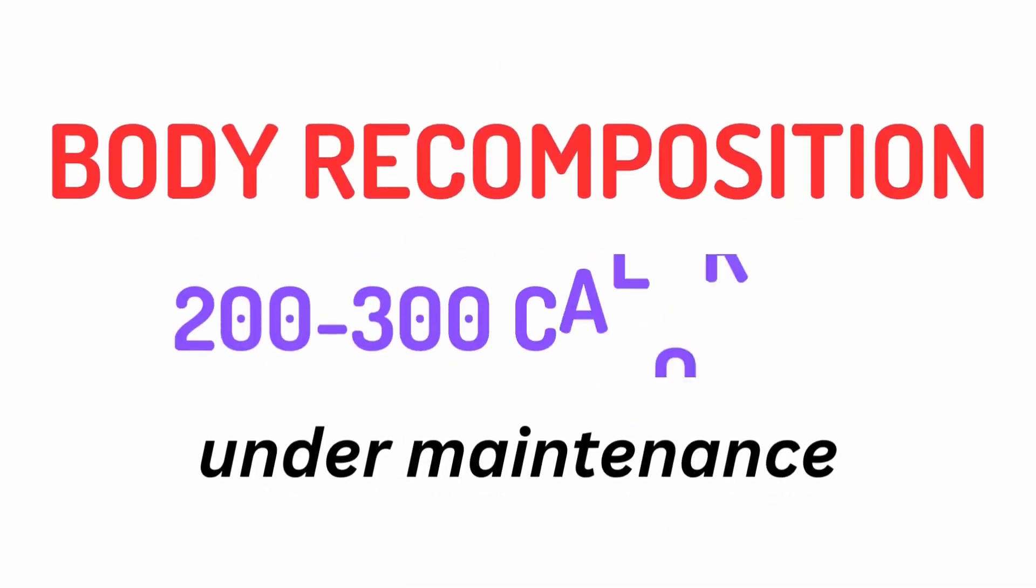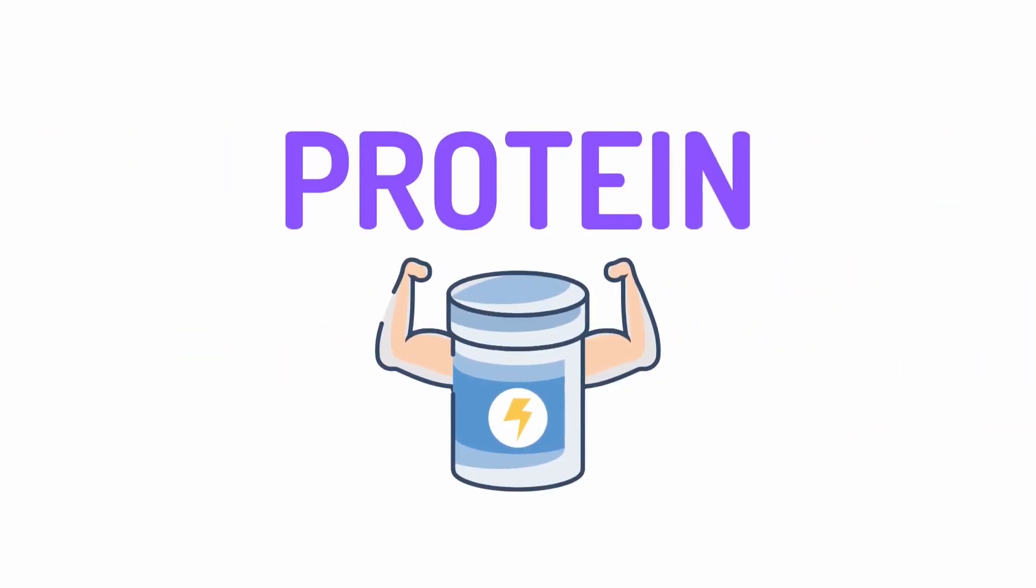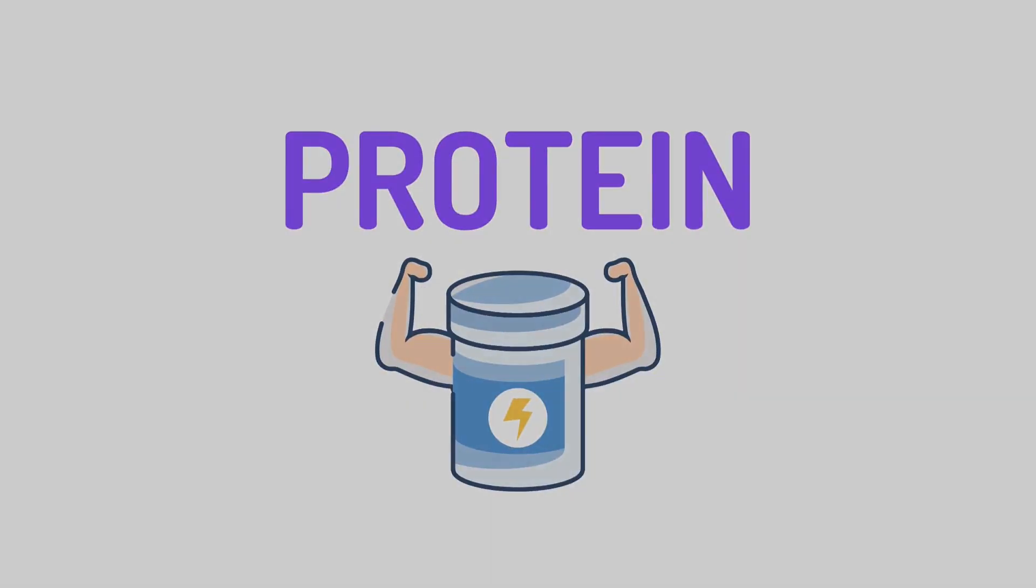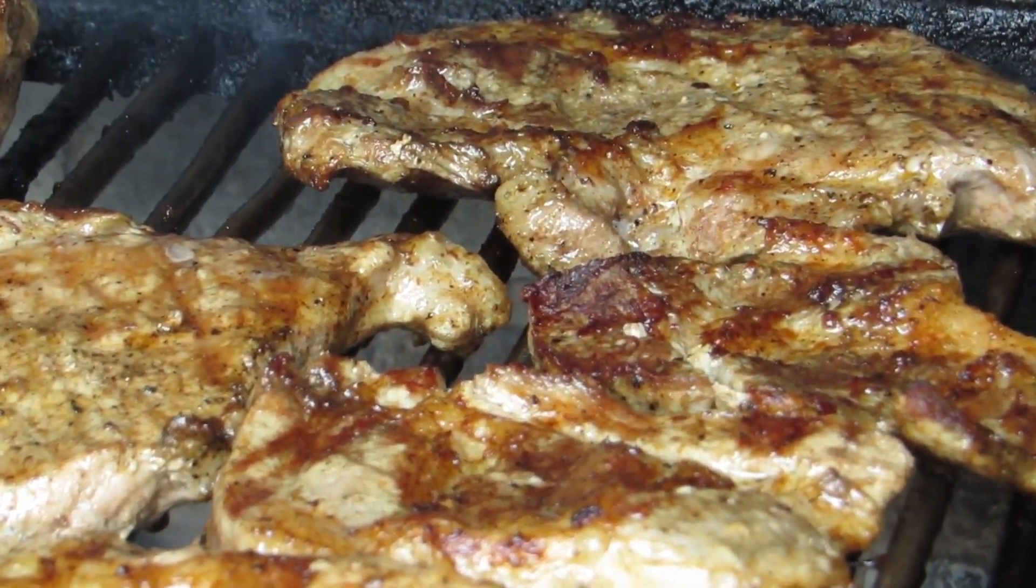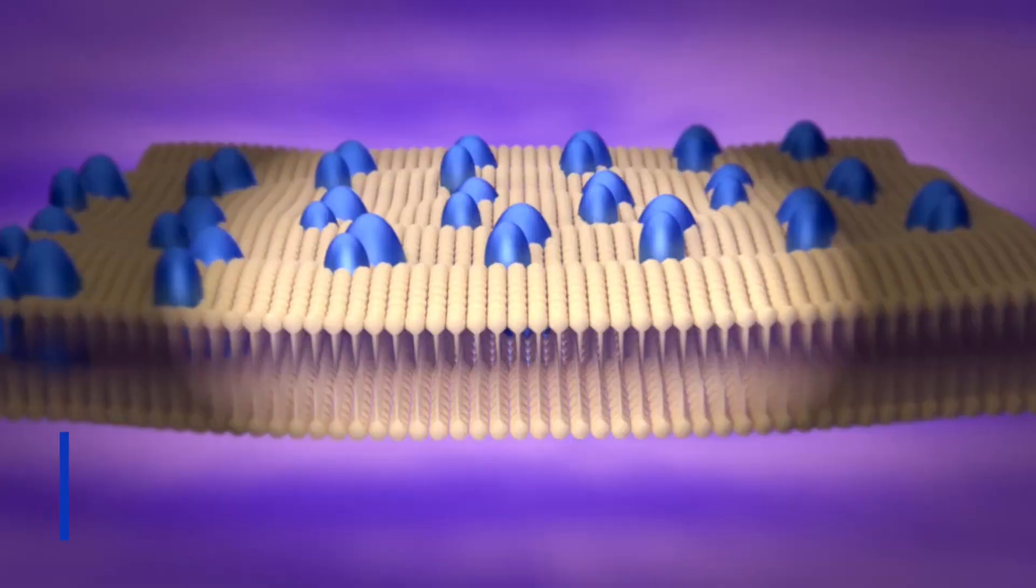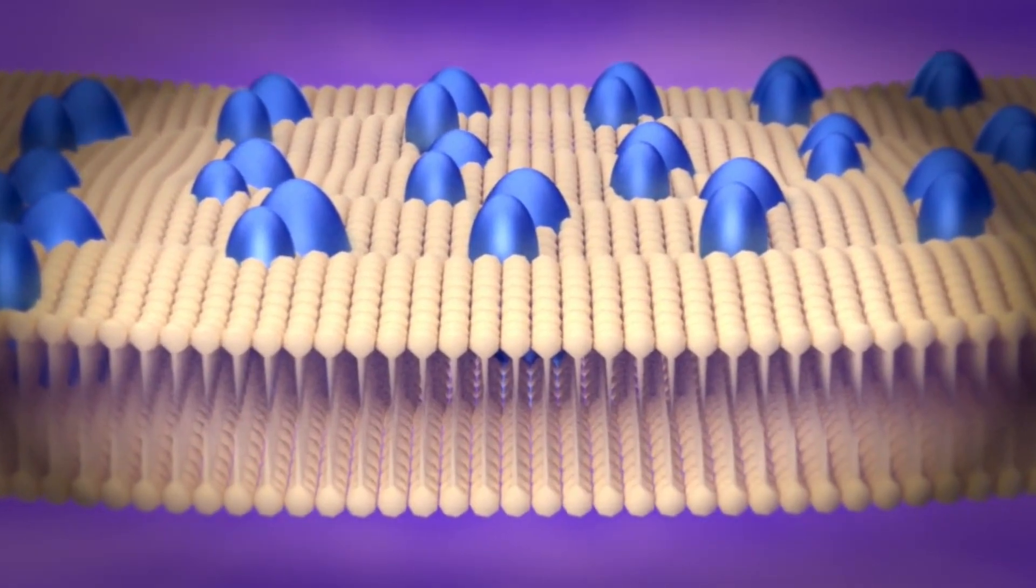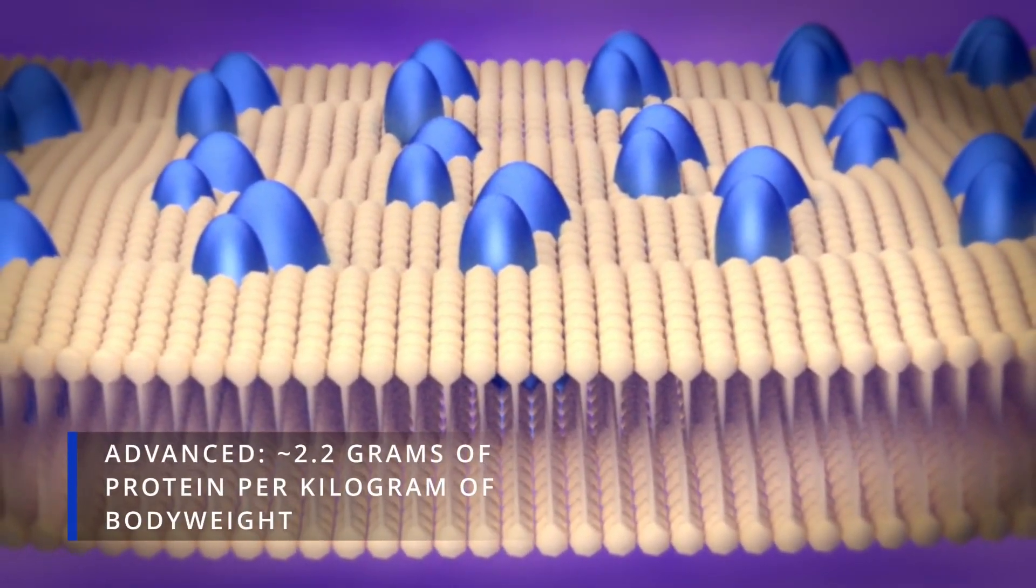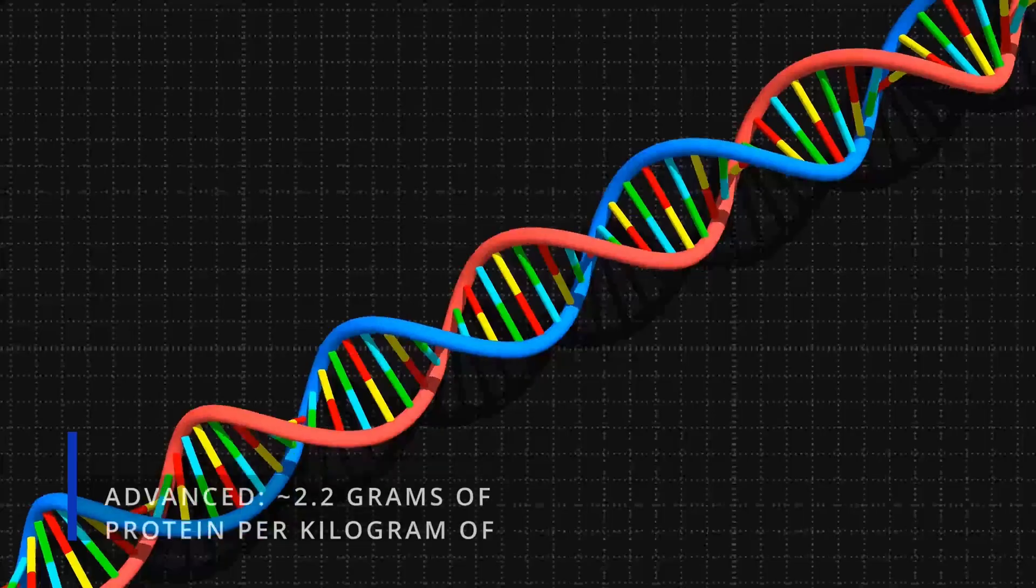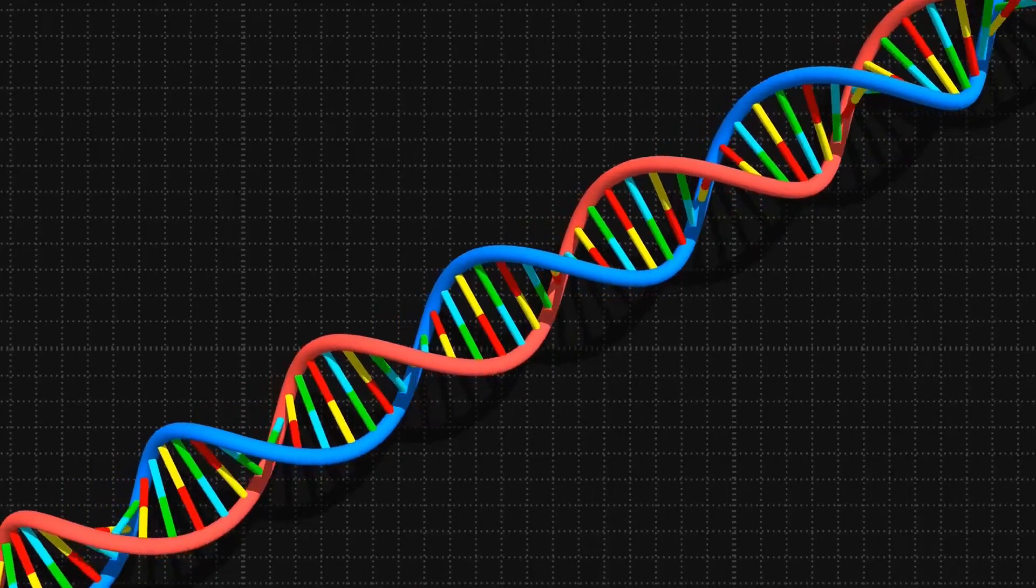For a body recomposition, you would need to eat 200-300 calories under maintenance to render fat loss. As far as protein goes, you can determine the amount you would consume on a daily basis. Beginners who are not experienced weightlifters can eat closer to 1.6 grams per kilogram of body weight, and for those who are more advanced, a protein intake closer to 2.2 grams per kilogram of body weight will be sufficient.